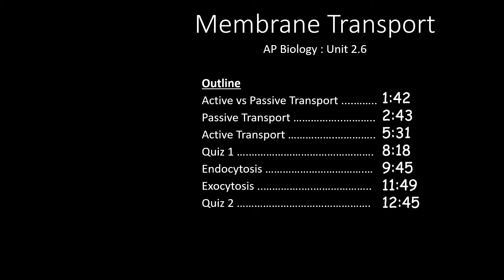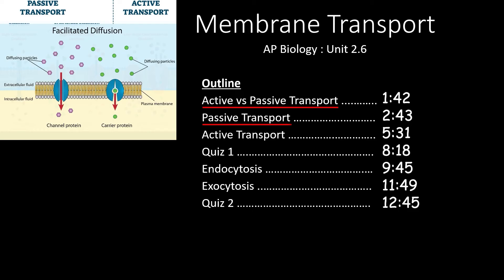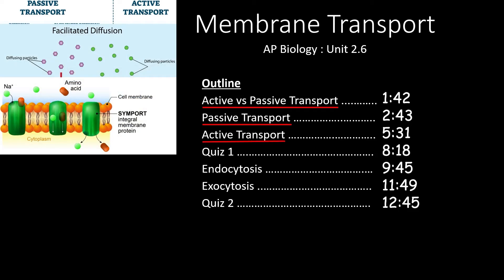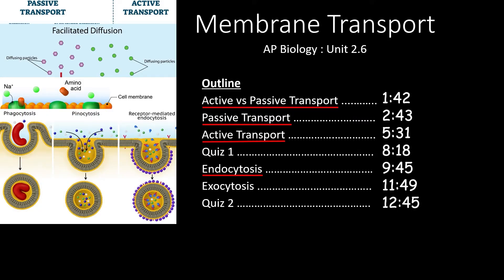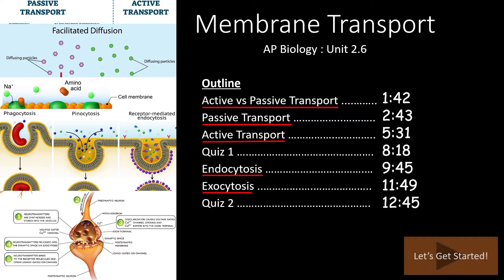This video covers section 2.6 of the AP Biology Curriculum: Membrane Transport. We'll start by looking at the differences between active and passive transport. Then we'll take a specific look at both passive transport, including diffusion and facilitated diffusion, and the energy-dependent modes of active transport. After the quiz, we'll take a look at how cells can take in large amounts of material via endocytosis, and how cells can export large amounts of material via exocytosis. If you only need to review one of these topics, feel free to skip forward to the times outlined here.